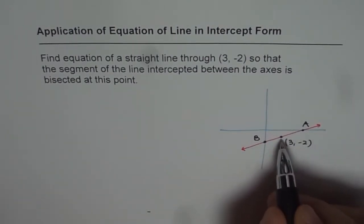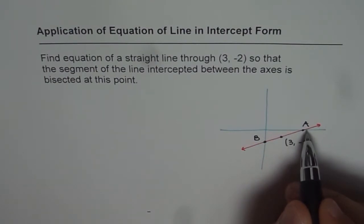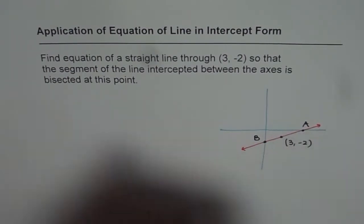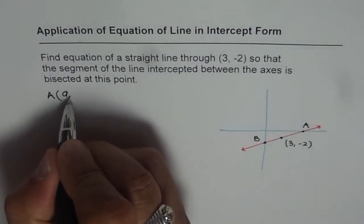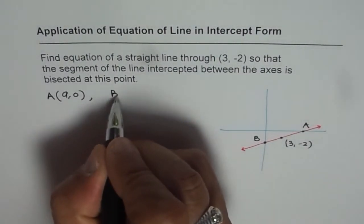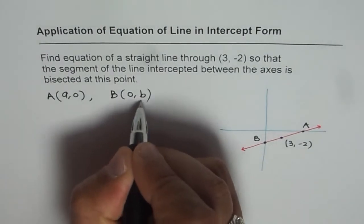Now when I say that the point bisects, that means same distance from both the places. Let us say point A, which is x-intercept for us, is (A, 0) and B is (0, B), the y-intercept.